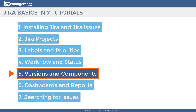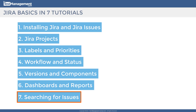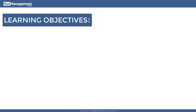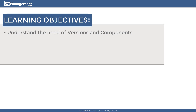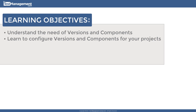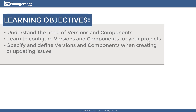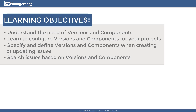In this module, module 5, we're going to look at versions and components and we're going to see how we can link our issues to different versions and different components and categorize issues based on those two properties. In the final two modules, six and seven, we'll look at dashboards and reports and finish up with some advanced search capabilities within Jira. The four key learning objectives are: understand why we need versions and components, learn how to configure them, see how to specify them when creating or updating issues, and search for issues based on those two parameters.